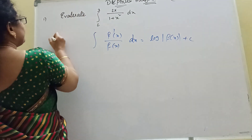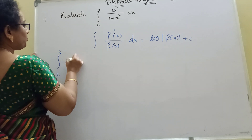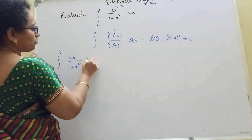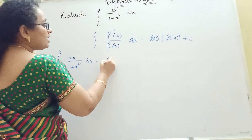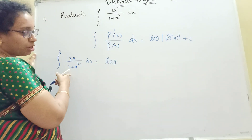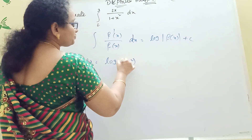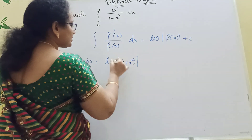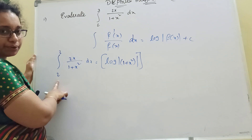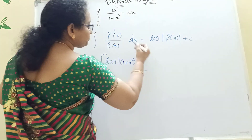The problem is given as the integration from 2 to 3 of 2x divided by (1 plus x squared) dx. The formula to apply is log mod of x. If I consider the denominator 1 plus x squared, applying the log formula with limits 2 to 3.